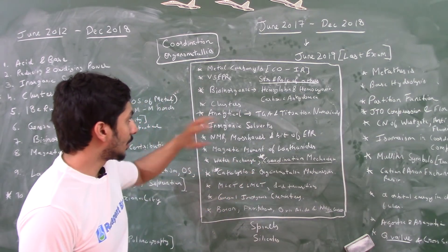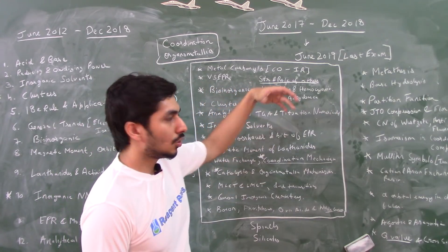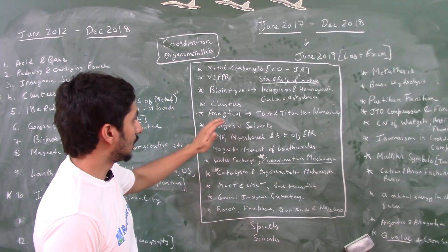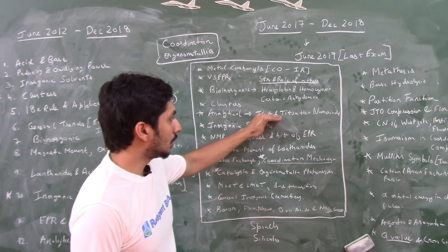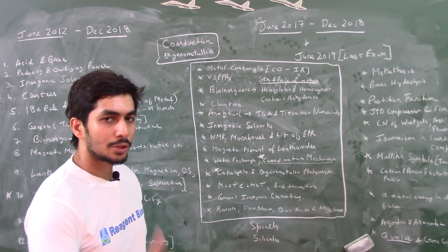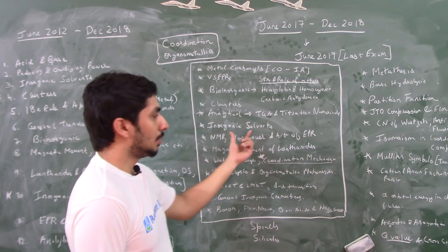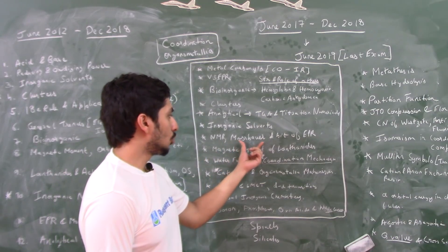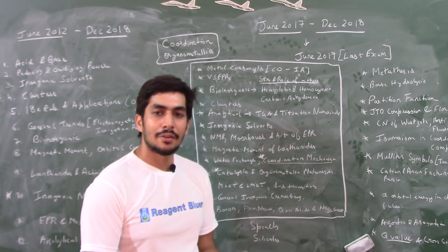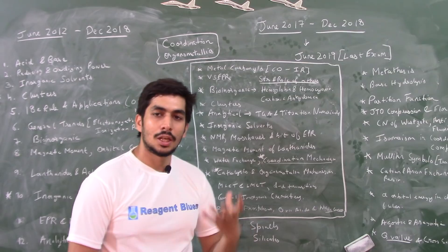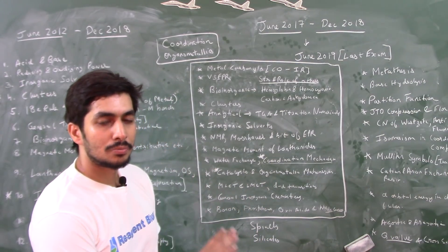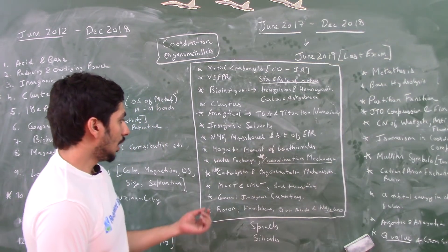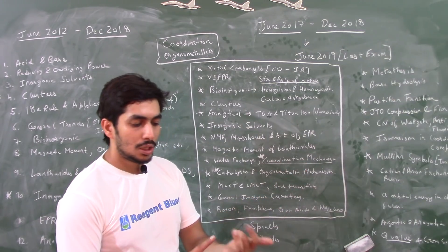To summarize: metal carbonyls, VSEPR, bio-inorganic (focus on functions and roles, and more on the structure of hemoglobin, hemocyanin, and carbonic anhydrase). For analytical chemistry if you have time, focus on TGA and titration numericals. Clusters are a must — watch the inorganic solvents video for the guaranteed 4-marker. Focus on Mössbauer spectroscopy, then lanthanides and actinides. From coordination chemistry: labile and inert complexes, trans effect, water exchange rate, inner sphere and outer sphere mechanism, Marcus equation, base hydrolysis, and isomerism in coordination complexes.